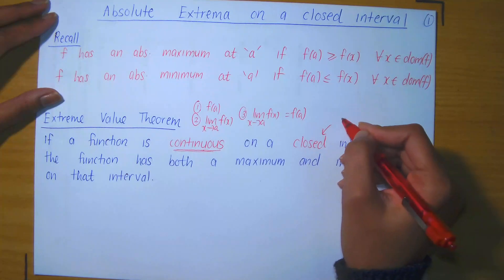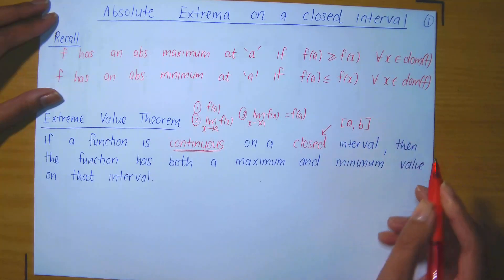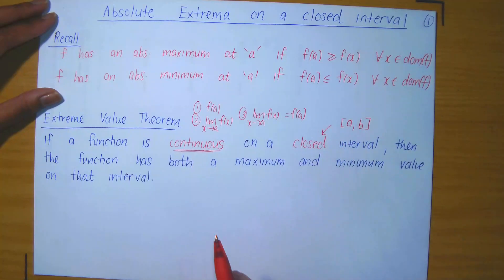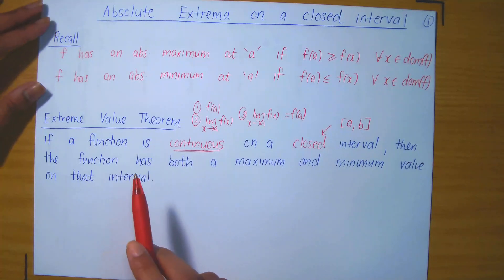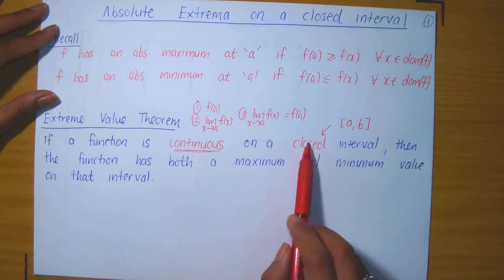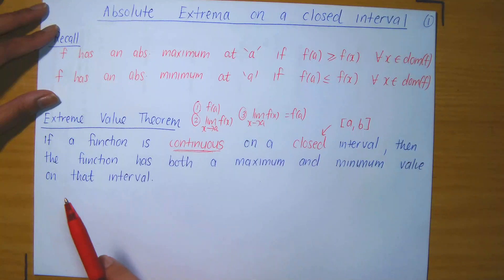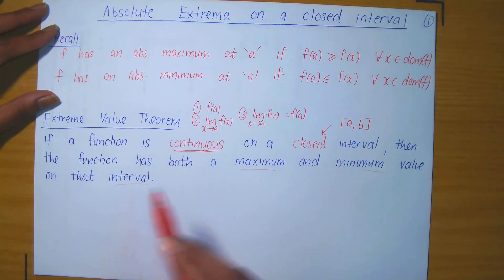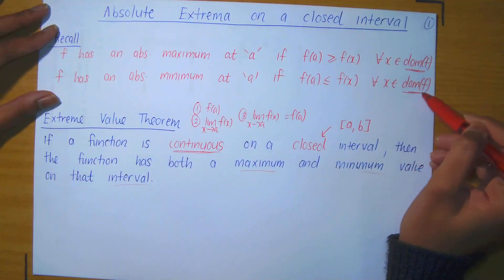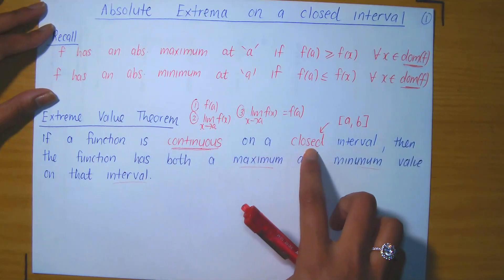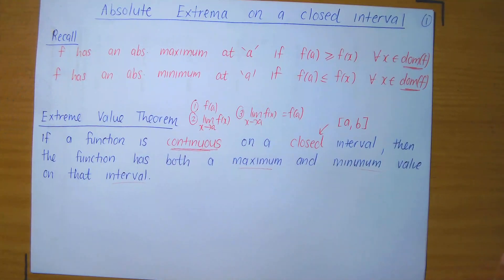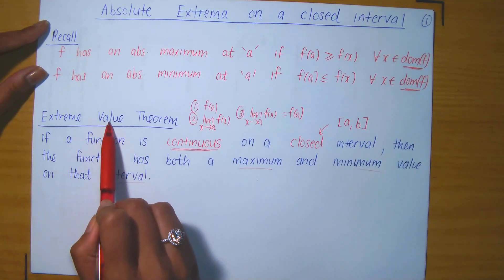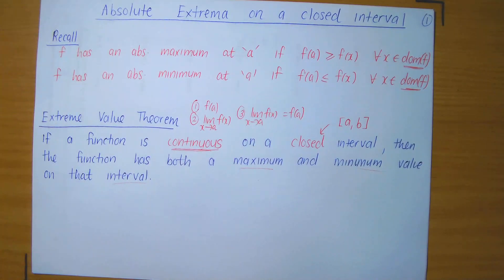A closed interval consists of all values x between a and b, including a and b. The Extreme Value Theorem tells you that if a function is continuous on some closed interval, then the function has both a maximum and minimum value on that interval. So if the domain of f is a closed interval for which f is continuous, then f has an absolute maximum and an absolute minimum by virtue of the Extreme Value Theorem.